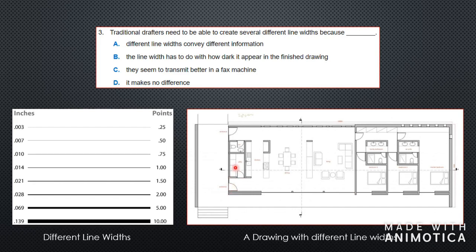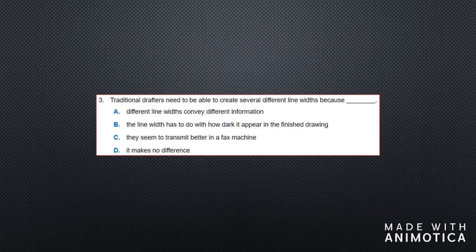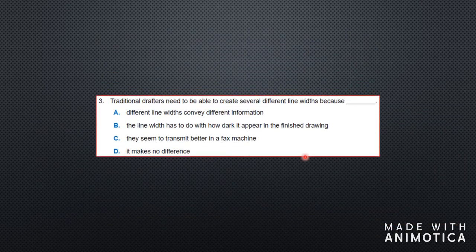You have the door, the toilet, the tables, chairs, cupboards, sofa — all that kind of stuff. You need different line thicknesses so that you can know how to read the drawing, because the drawing conveys different information. So the answer is: different line weights convey different information.